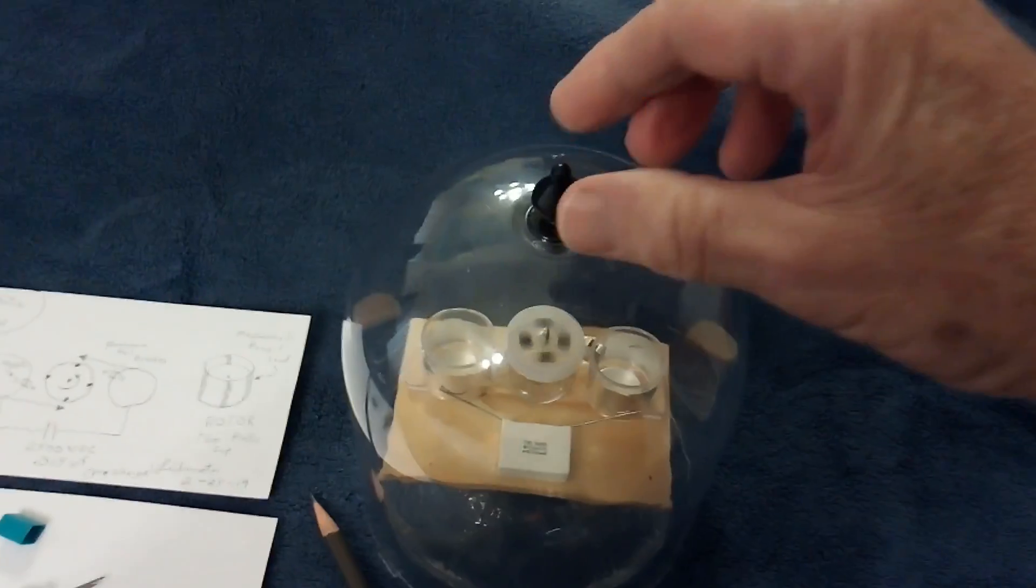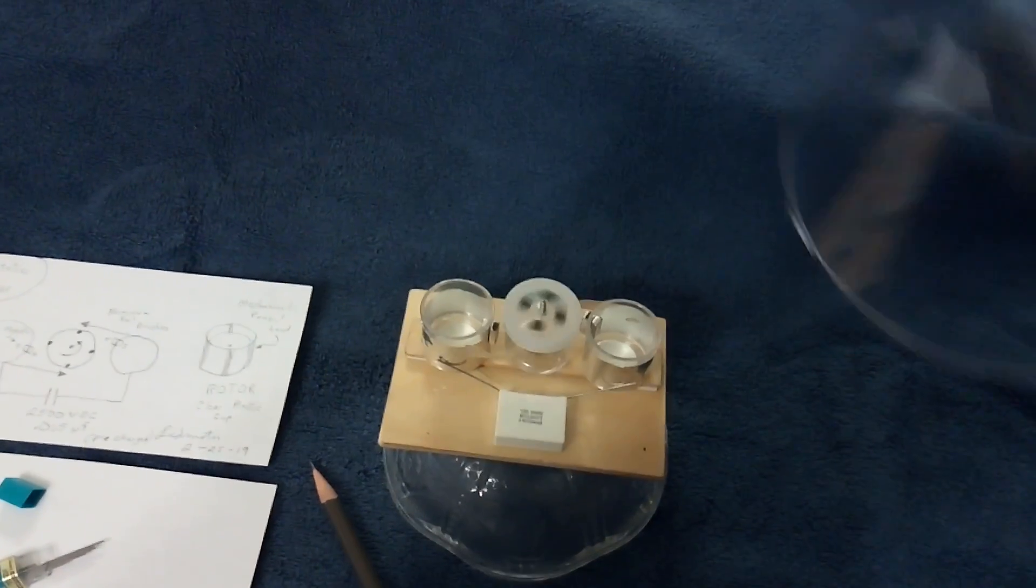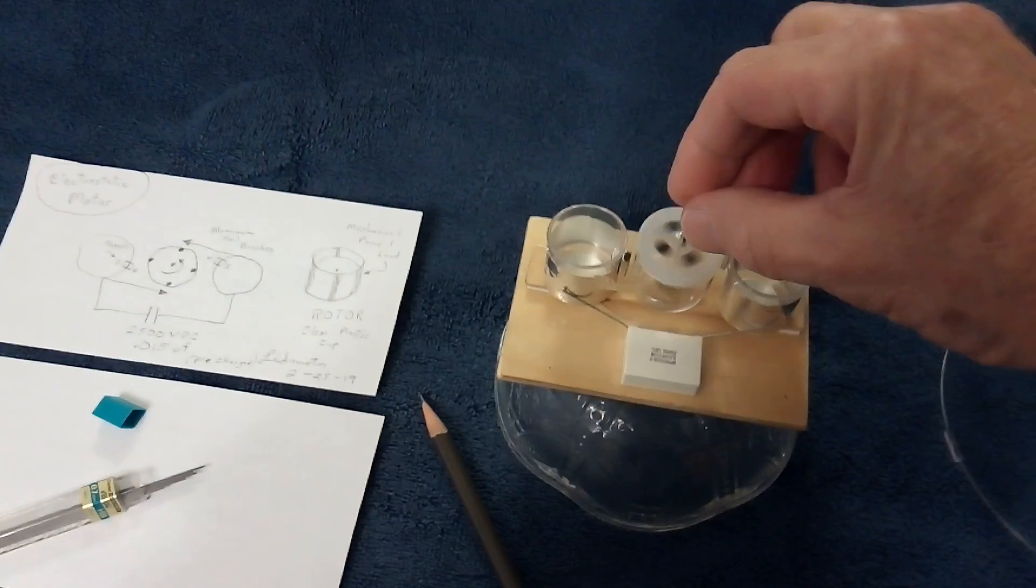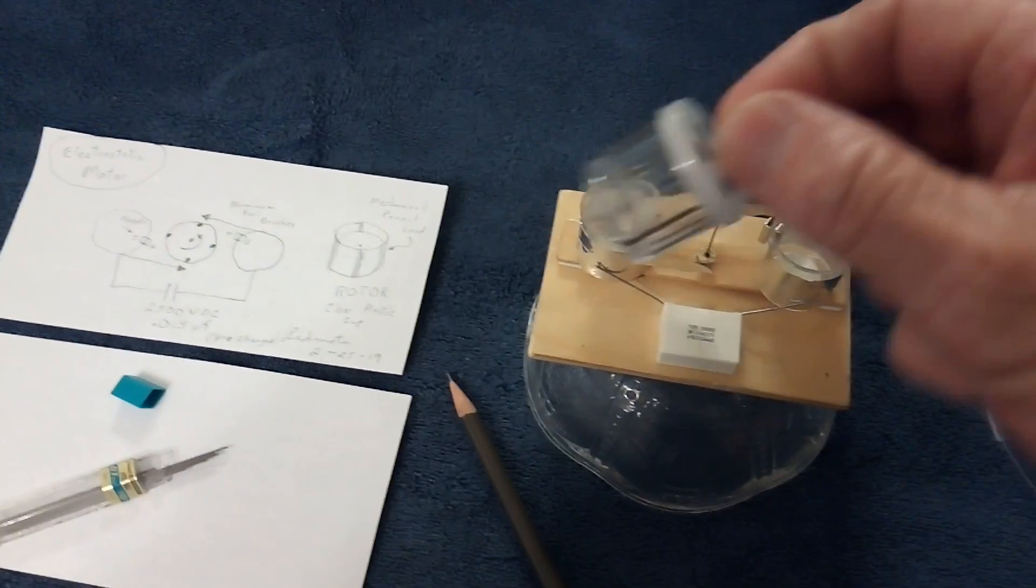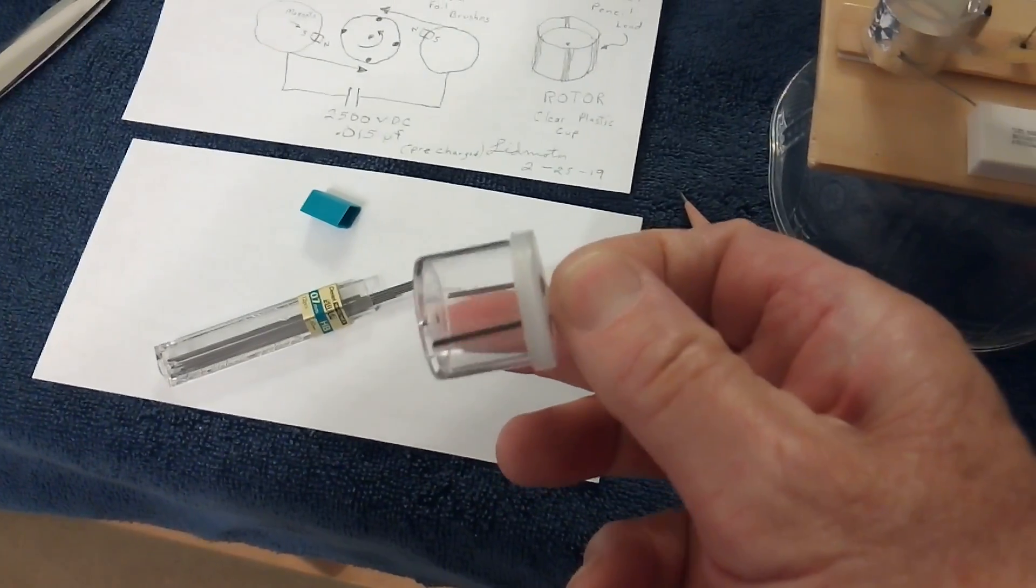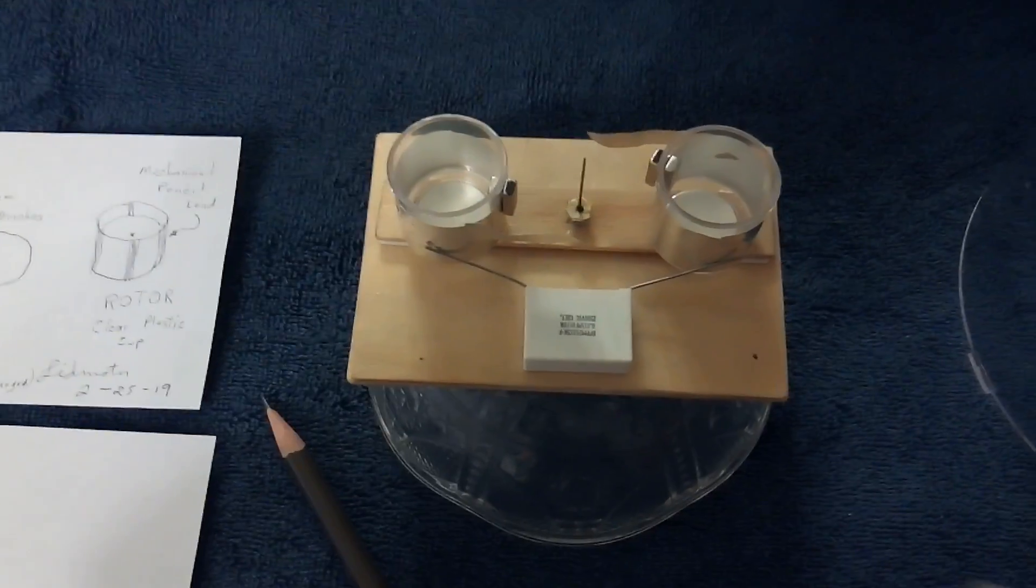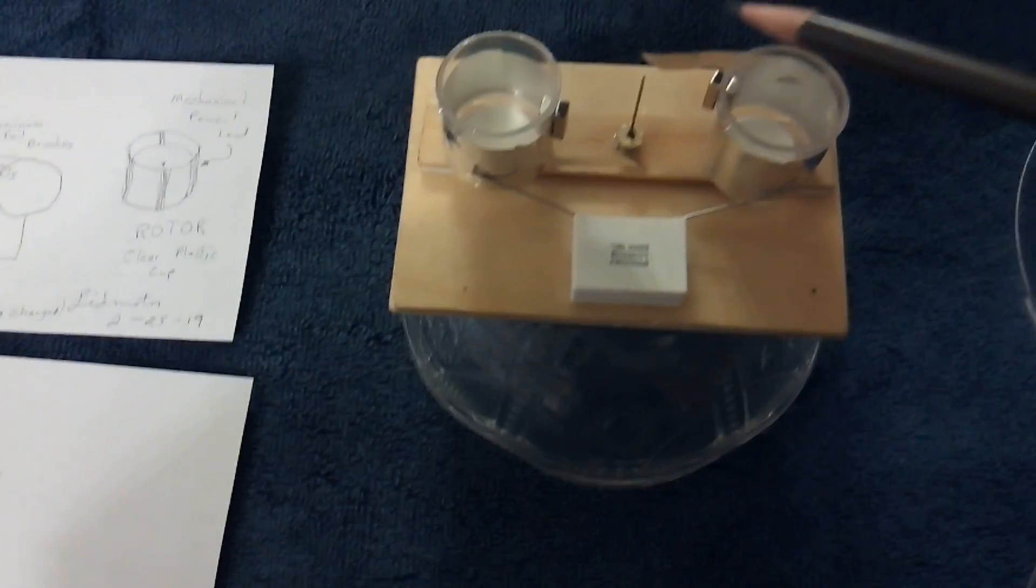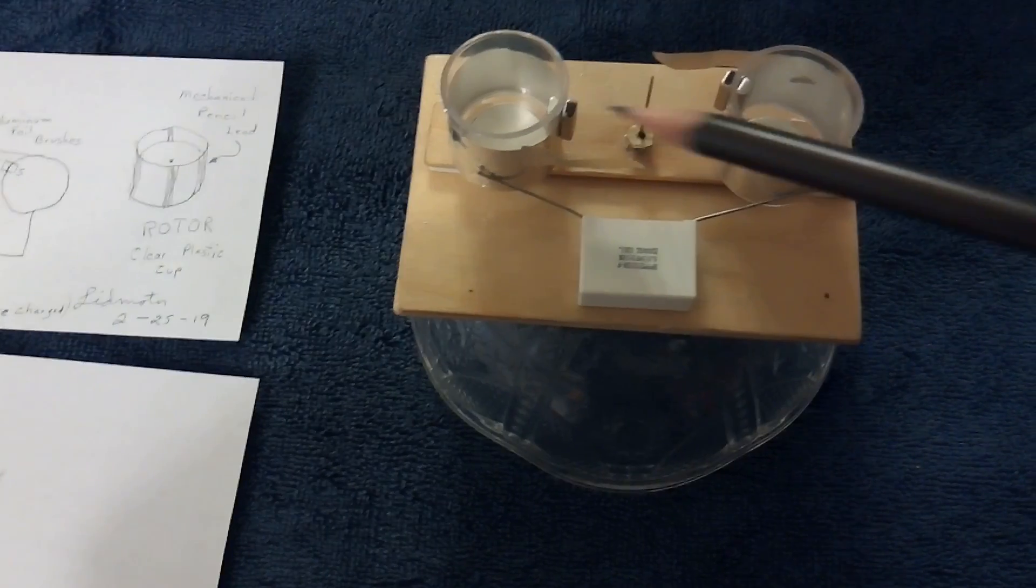Let me show you what this is like here. Let me take this apart. This rotor, like I say, is sticks of this graphite pencil lead stuck on there and it charges and discharges using these little brushes here.